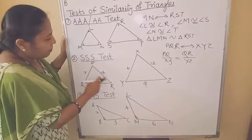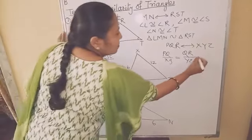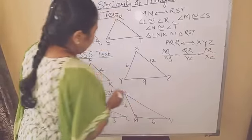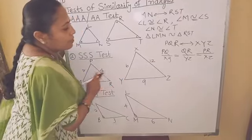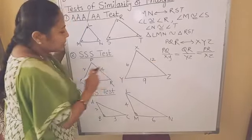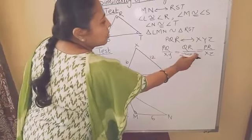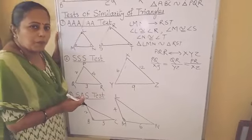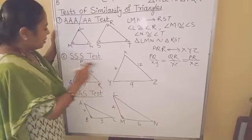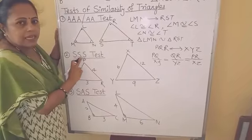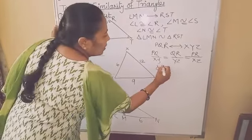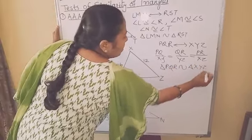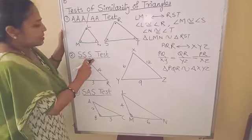The third side, PR upon XZ, is 4 upon 12 — again you get 1 upon 3. So the ratio of corresponding sides is equal, meaning the corresponding sides are in proportion. Then these triangles are similar by the SSS test: triangle PQR is similar to triangle XYZ by the SSS test.